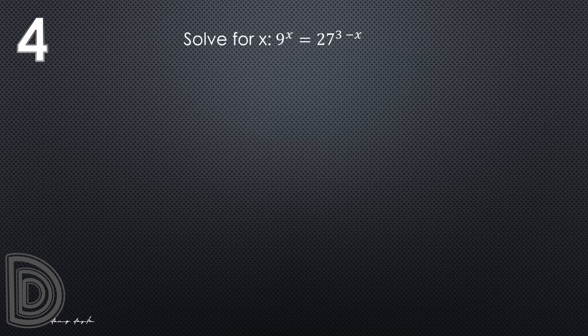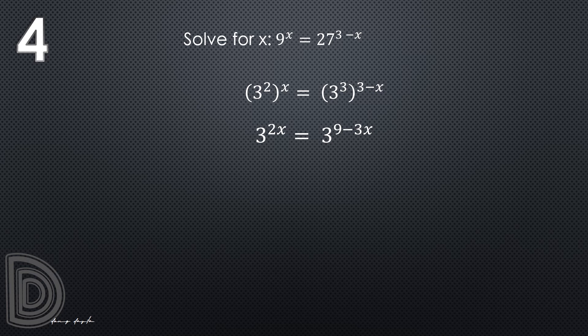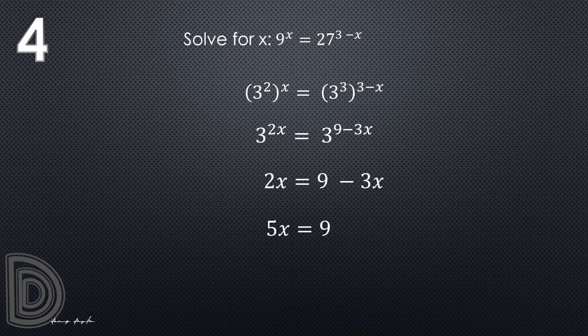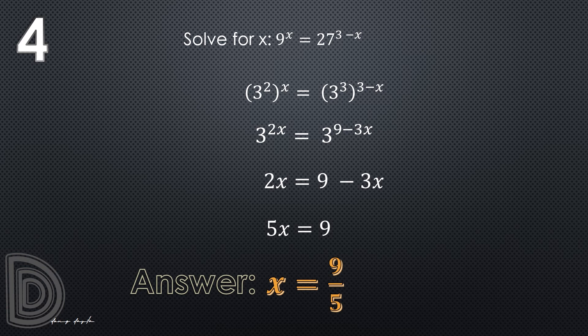Let us proceed to the solution for question number 4: solve for x in 9 raised to x equals 27 raised to 3 minus x. Both sides can be expressed with base 3: 9 is 3 squared and 27 is 3 cubed. So we have 3 raised to 2x equals 3 raised to (9 minus 3x). Since the bases are equal, the exponents must be equal: 2x equals 9 minus 3x, giving 5x equals 9, so x equals 9 over 5.